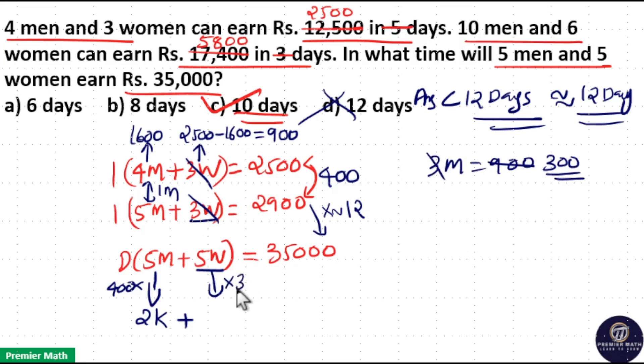So if you substitute here, 5 women earn 5 into $300, that's $1,500 or $1.5k in 1 day. Then in 1 day 5 men and 5 women will earn $3,500, that is $3.5k. Then number of days must be 10 here. That is number of days equals $35,000 divided by $3.5k, which is 10 days.